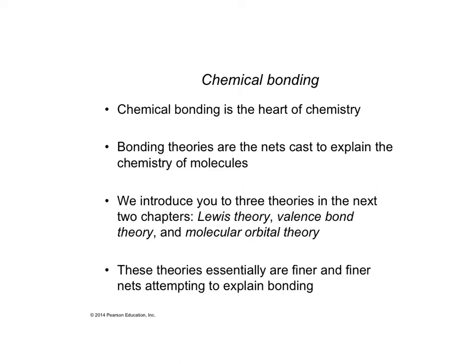In the next two chapters we're going to introduce three separate bonding theories. The first is called Lewis theory, which is essentially what this chapter deals with. The second is valence bond theory, and the third is molecular orbital theory. These three theories differ with respect to one another in a reciprocal relationship between accessibility versus actual explanation of what we really see. Lewis theory is the most accessible — anyone can make Lewis structures.